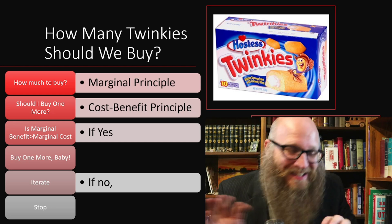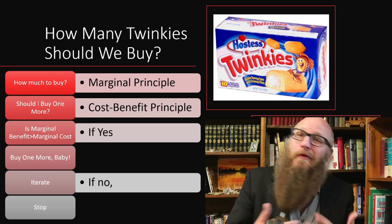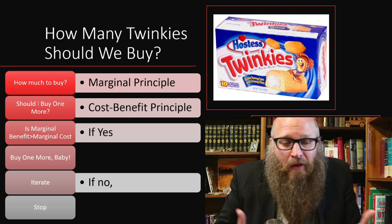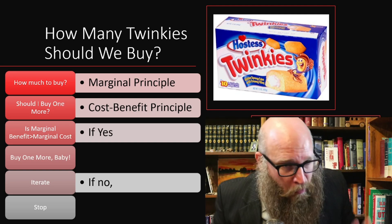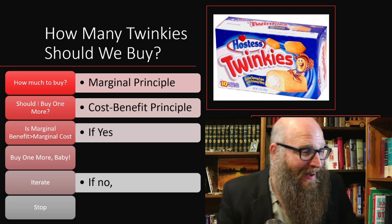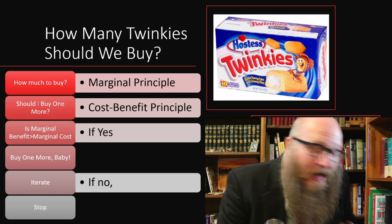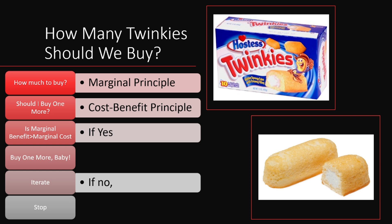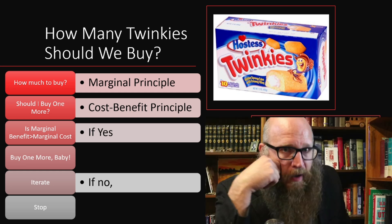Is the marginal benefit I get from enjoying the Twinkie bigger than the marginal cost? Remember, the marginal cost is not just the dollars, but it's also the potential imbalance of health. For the first Twinkie, the answer is yes — so buy one more. Next step: iterate. You keep iterating as long as each additional marginal benefit of the Twinkie is bigger than each additional marginal cost thereof.